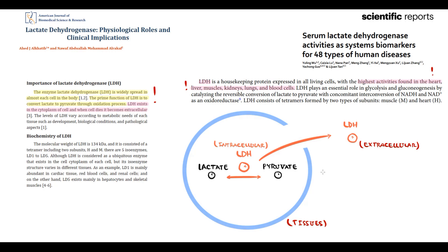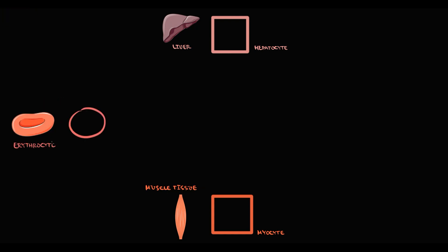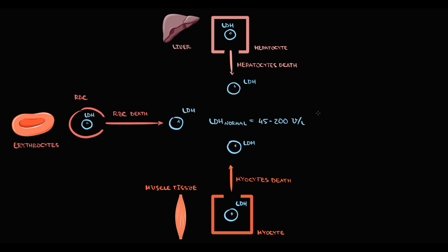Let's explain which factors can cause increasing LDH levels. LDH in highest concentrations is present in liver tissue, muscle tissue, and inside red blood cells. The only way LDH can enter the blood is by cell death — death of hepatocytes, myocytes, and red blood cells. Even without any pathology, cells die of old age in the process of tissue self-renewal, giving a normal LDH concentration of approximately 45 to 200.